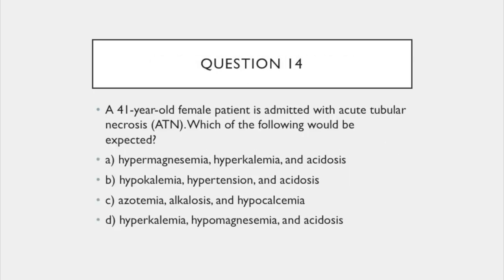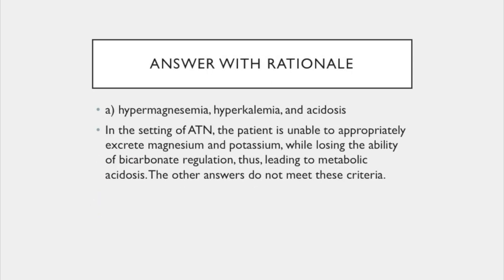Question 14. A 41-year-old female patient is admitted with acute tubular necrosis. Which of the following is expected? A. Hypermagnesemia, hyperkalemia, and acidosis. B. Hypokalemia, hypertension, and acidosis. C. Azotemia, alkalosis, and hypocalcemia. D. Hyperkalemia, hypomagnesemia, and acidosis. The answer is A: hypermagnesemia, hyperkalemia, and acidosis. In the setting of acute tubular necrosis, the patient is unable to appropriately excrete magnesium and potassium, all the while losing the ability of bicarbonate regulation, thus leading to metabolic acidosis. The other answers do not meet these criteria.